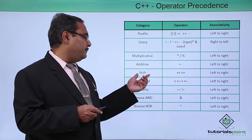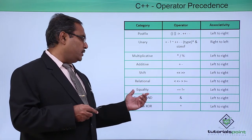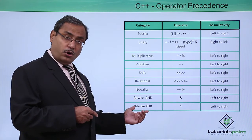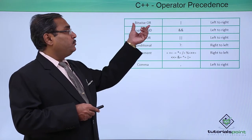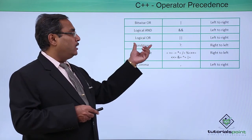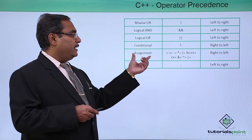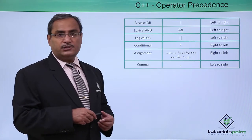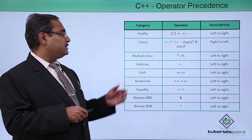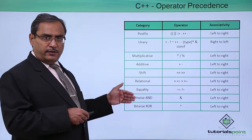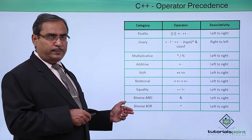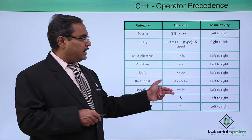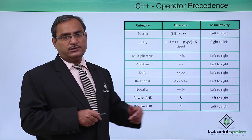Here we have additive, shift, relational, equality, bitwise AND, bitwise XOR, bitwise OR, logical AND, logical OR, conditional, assignment operators, and then comma, and their respective associativity are in front of us. This is a list from the higher precedence to the least precedence with the respective operator lists and their associativity.